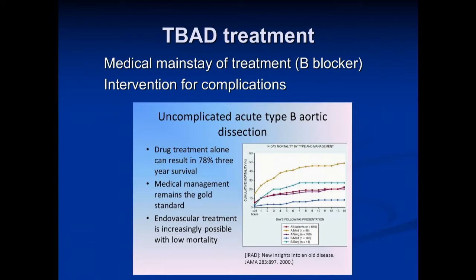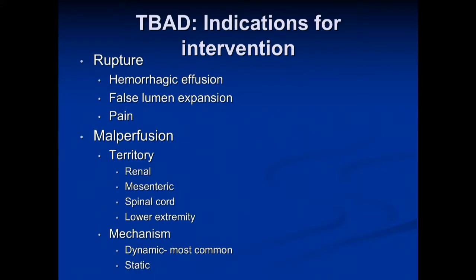As shown by the IRAD registry, the top line is medically managed Type A dissection — they do the worst — and the patients that do the best are medically managed Type B dissections. So initially, for Type B dissections, the goal is medical management.